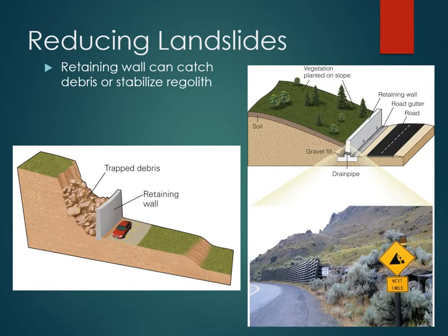You can also build a retaining wall. Retaining walls can catch debris or stabilize regolith if placed right against the slope. These retaining walls can hold back any loose material that is already on the move, and this is a very common approach in many situations.